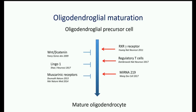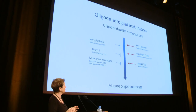Understanding of oligodendrocyte maturation has been transformed in recent years. Cues that inhibit oligodendroglial maturation include the Wnt/beta-catenin pathway, lingo-1 expressed by immature cells, and activation of muscarinic receptors. Factors promoting maturation include activation of the retinoic acid receptor gamma. Very interestingly, regulatory T cells can promote oligodendroglial maturation, as can certain microRNAs.